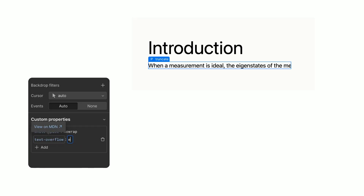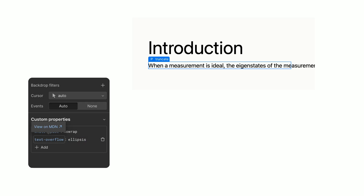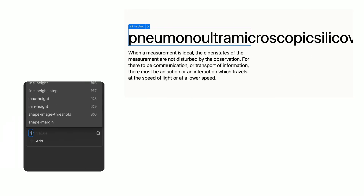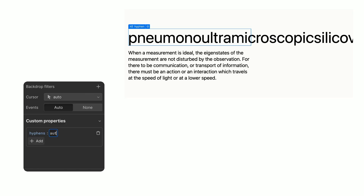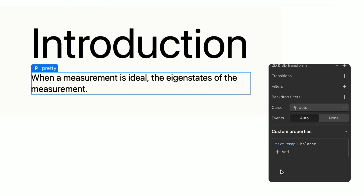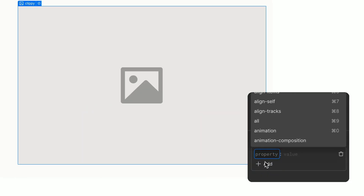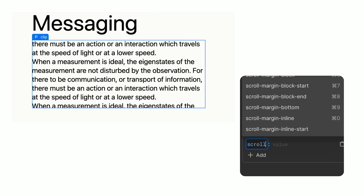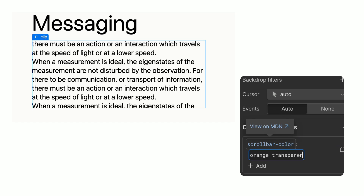So let's have a look at what you can add with these custom properties. You can truncate your text using text-overflow ellipsis, making sure that you have overflow hidden and white-space no-wrap. You can hyphenate very long words. You can add clamp and clamp to avoid huge and tiny text. Add text-wrap balance to balance paragraphs. Use clip-path to clip an image to a desired shape. You can even change the scrollbar color with just one CSS property.